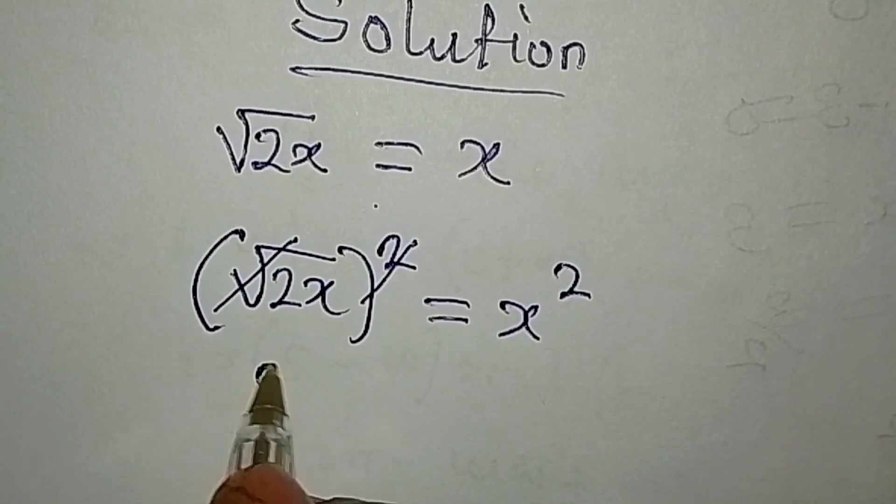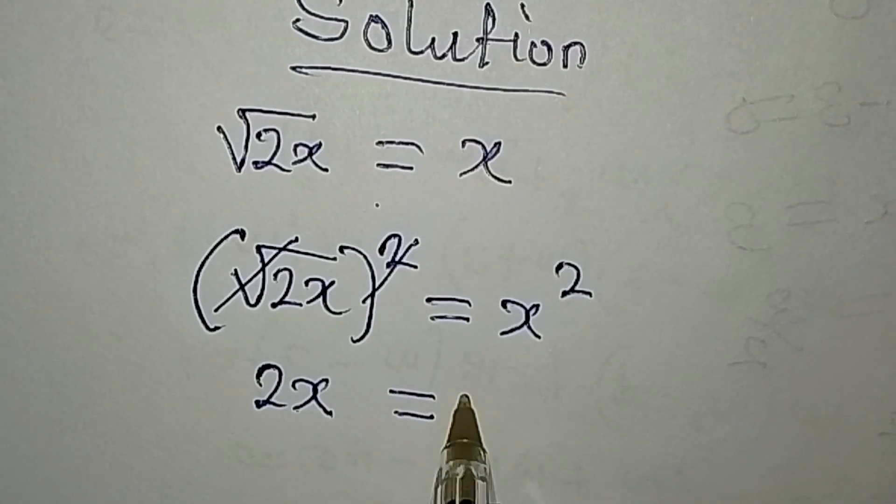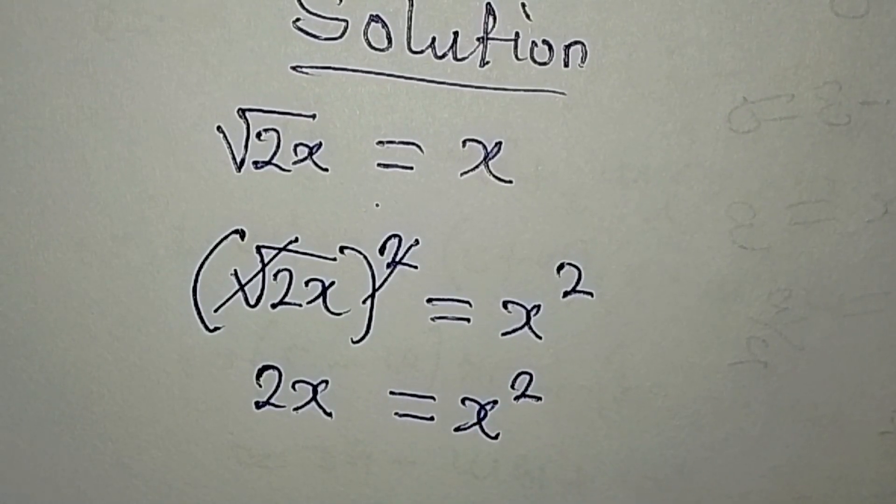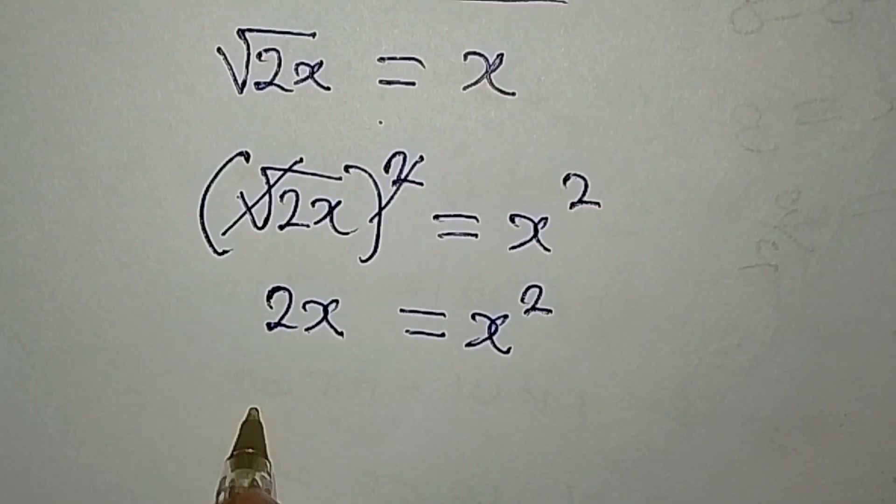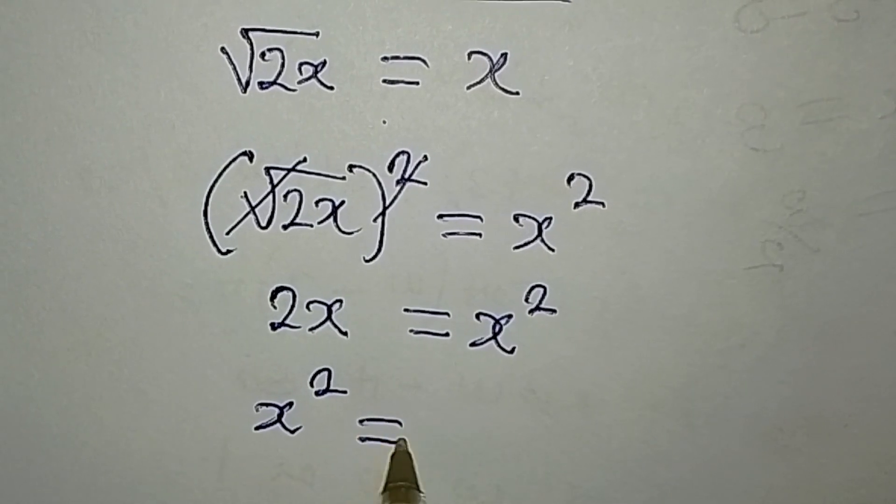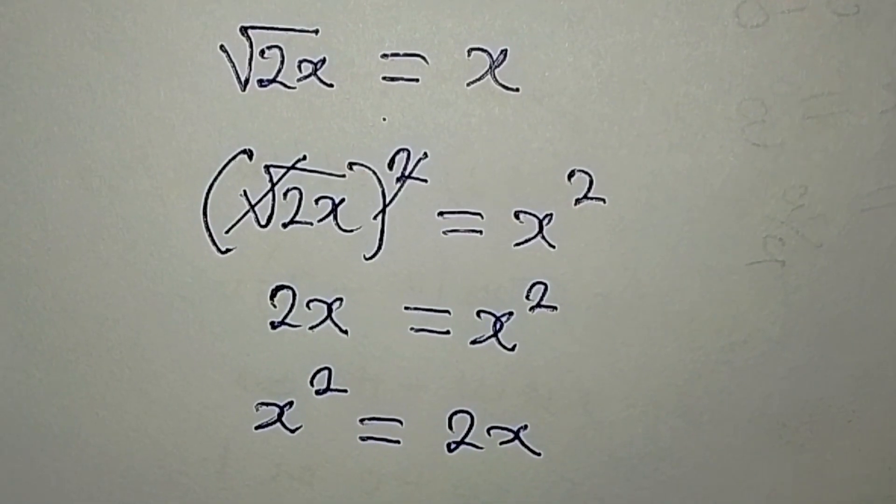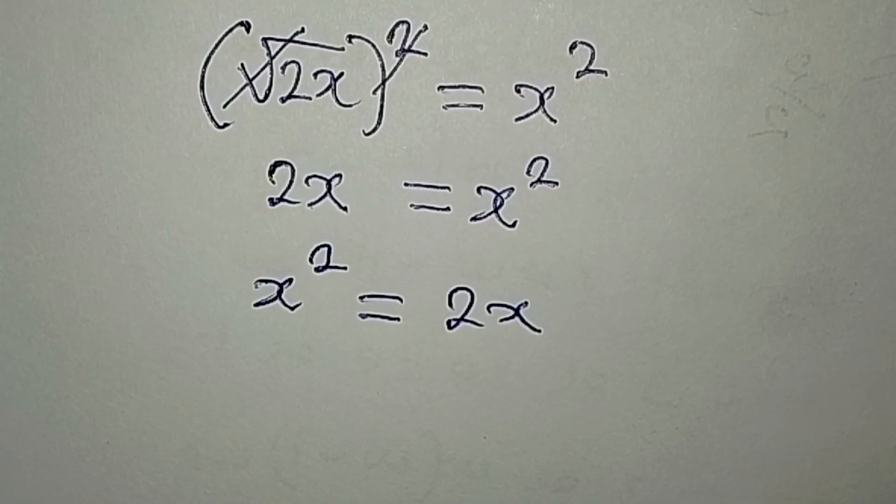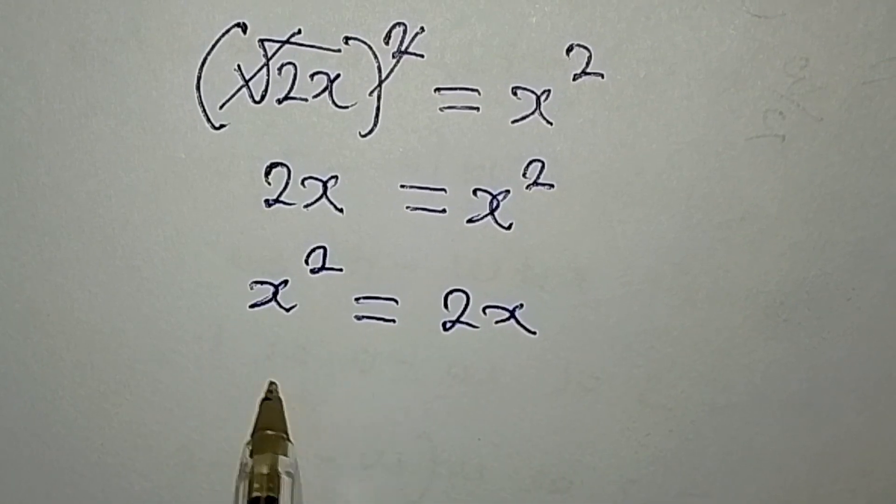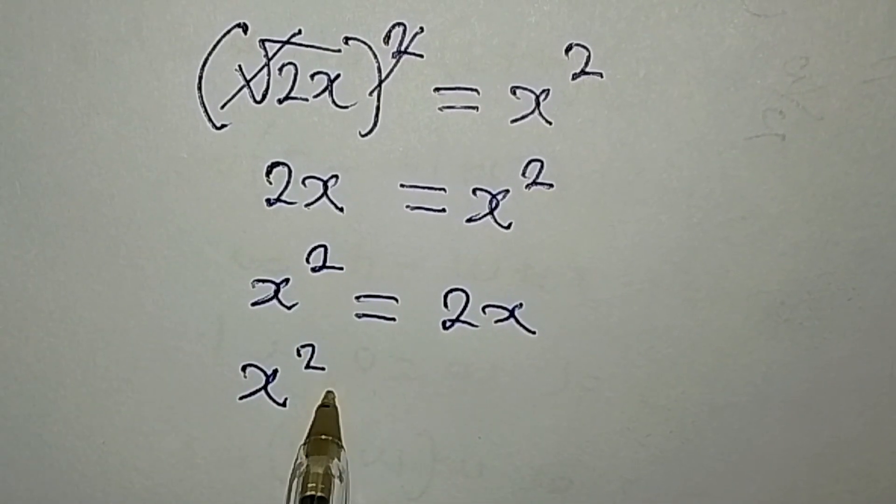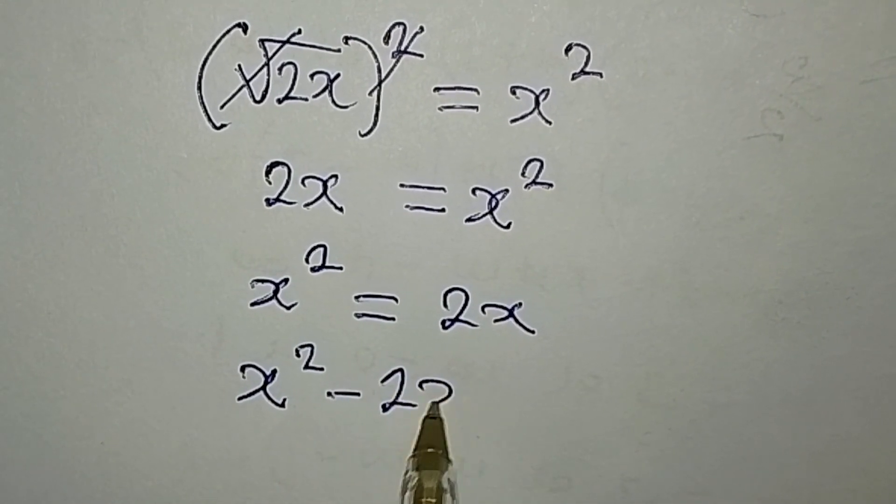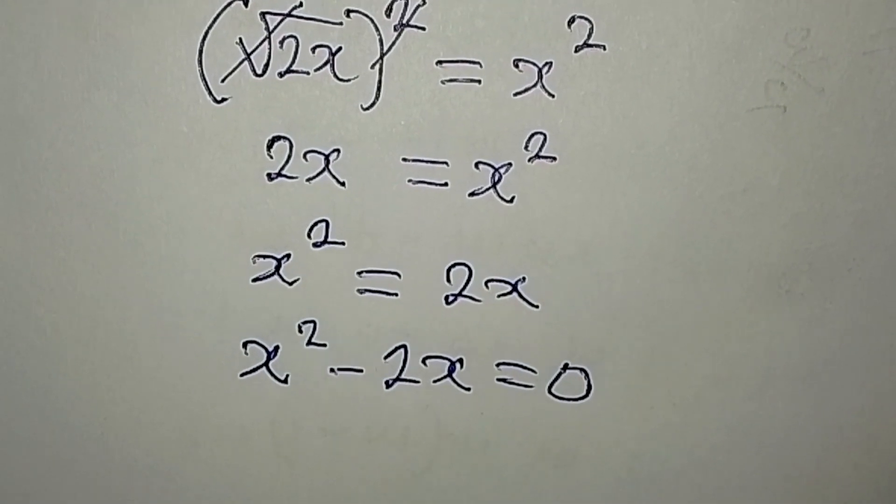The square can cancel the square root. 2x is equal to square of x. This also means that square of x is equal to 2x. Now what do you do? Bring 2x to the left: x squared minus 2x is equal to zero.